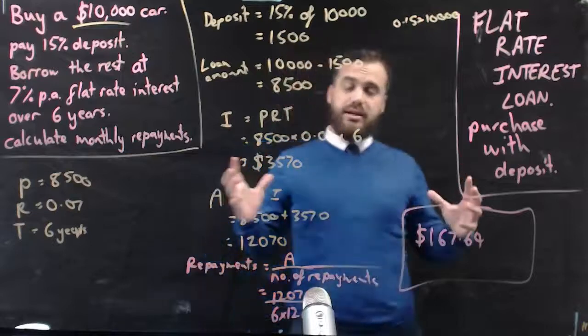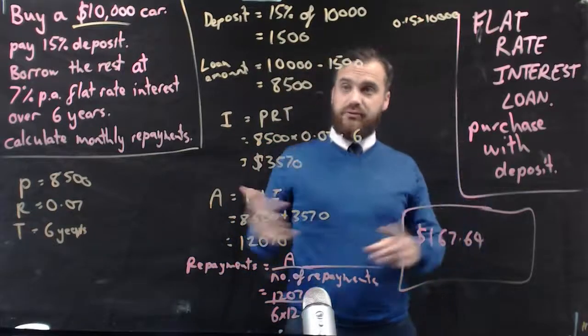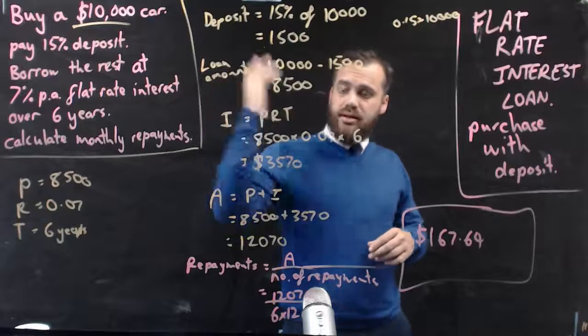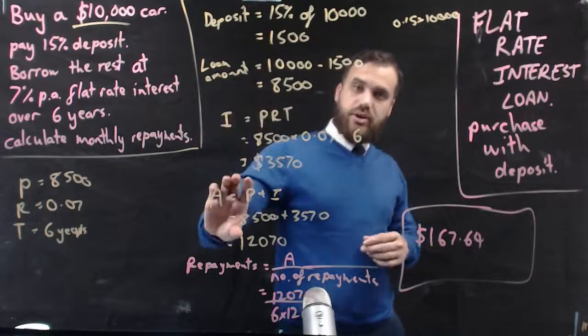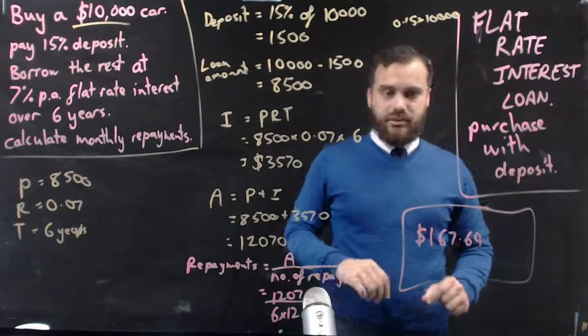Okay, that's about as complicated as this stuff gets. You can see there's about four steps here. Figure out the deposit and the loan amount, figure out the interest, figure out the total amount, and then come up with your number of repayments.